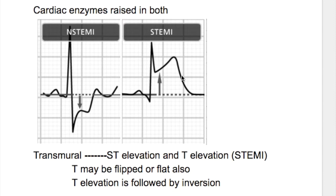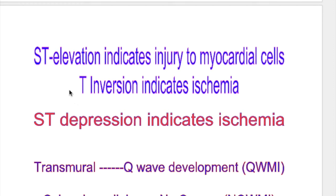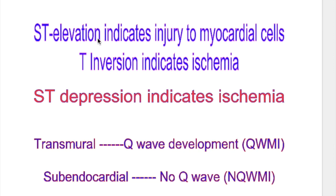Comparing the transmural infarct with the subendocardial infarct: in transmural infarct there is ST elevation, whereas in subendocardial infarct there is ST depression. ST elevation indicates injury to the myocardial cells, and ST depression indicates ischemia. T inversion also indicates ischemia — so both T inversion and ST depression indicate ischemia.